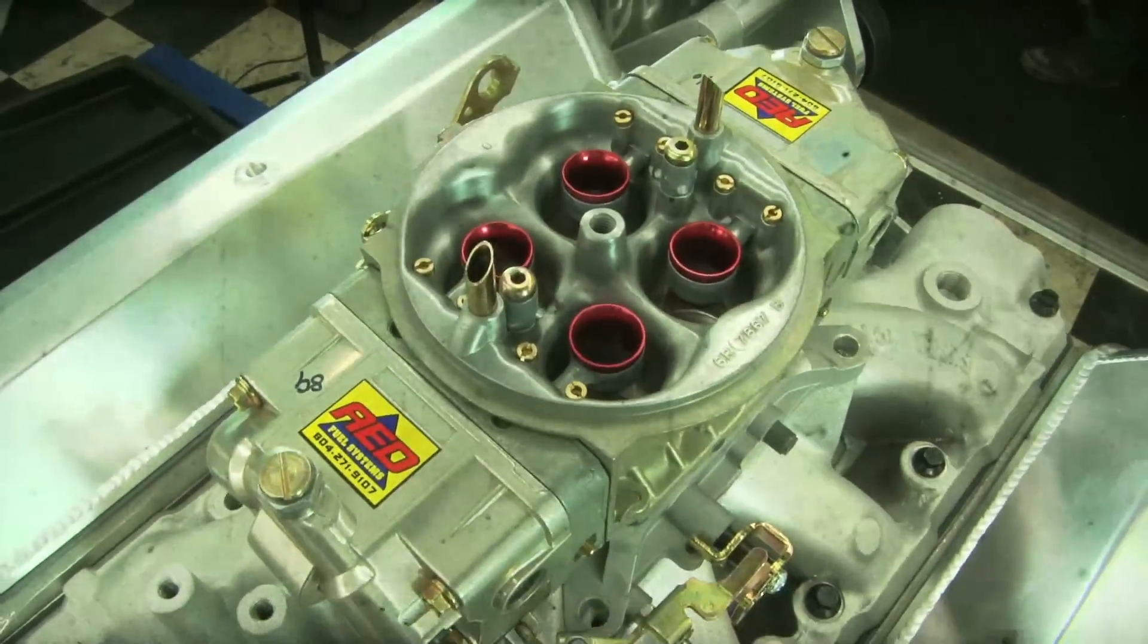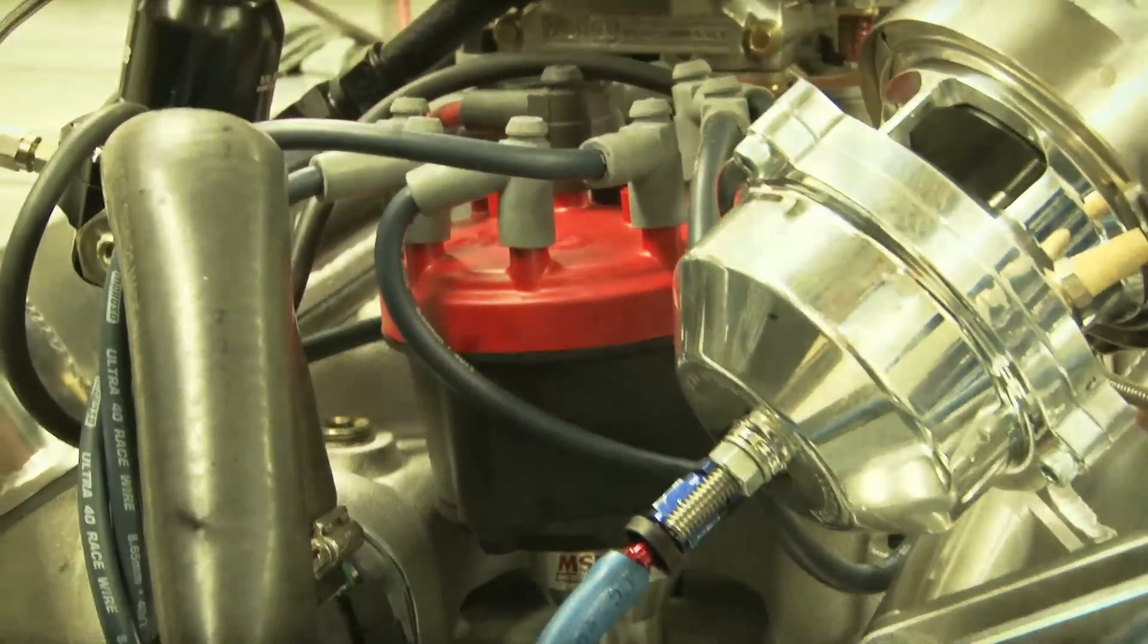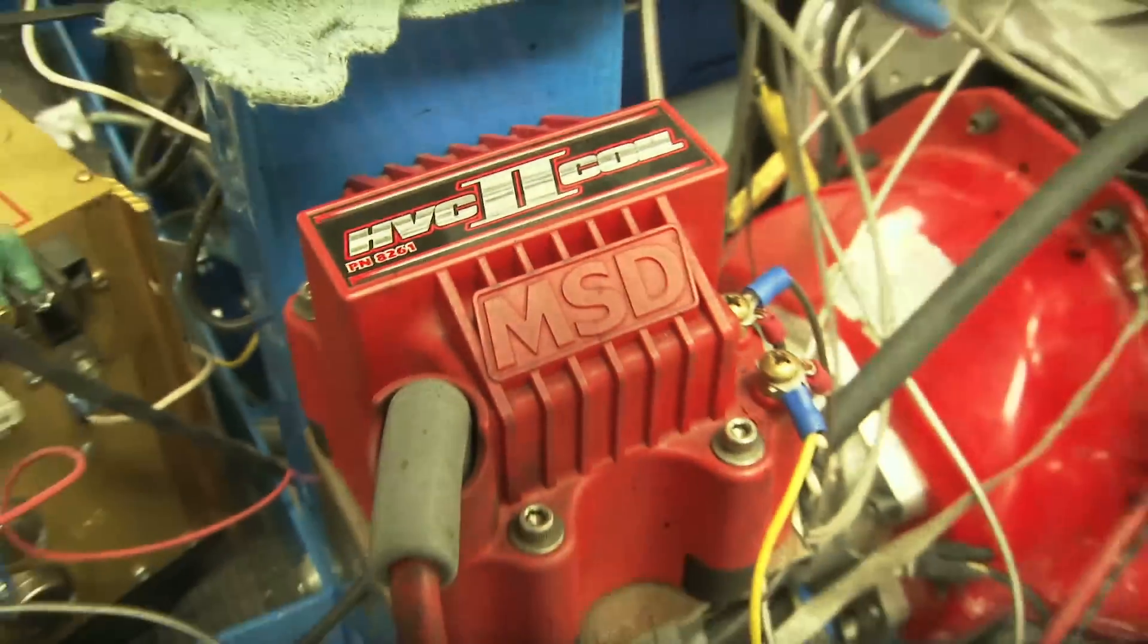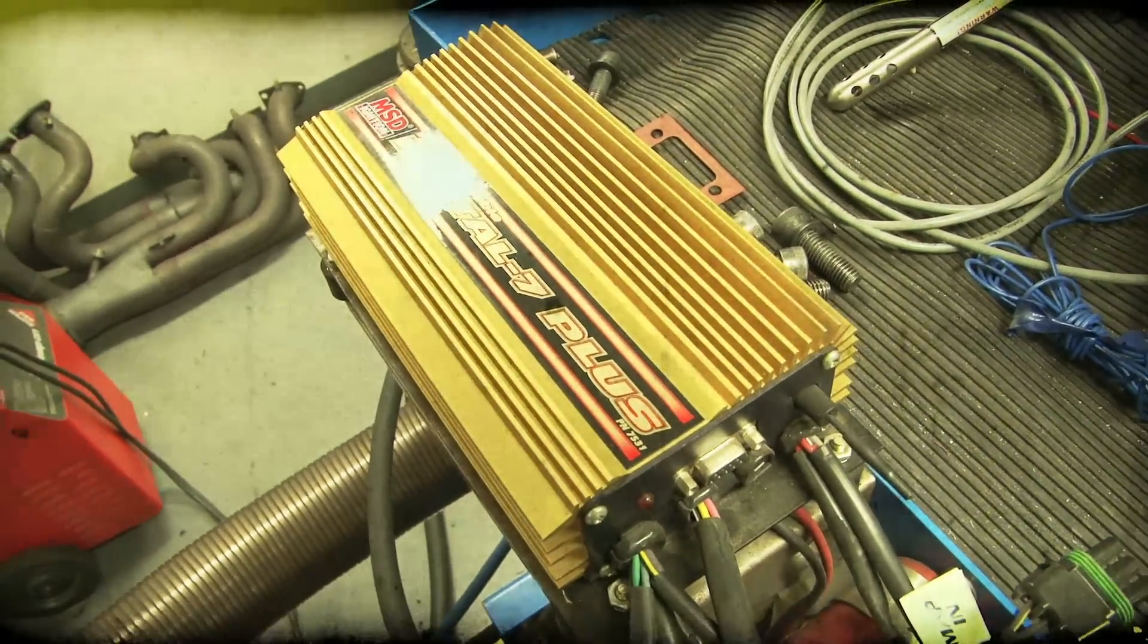The spark comes from none other than MSD with their mechanical billet body Pro Race distributor, accompanied by a set of MSD 8.5mm plug wires. This setup will deliver all the power we need to make over 1,000 horsepower.